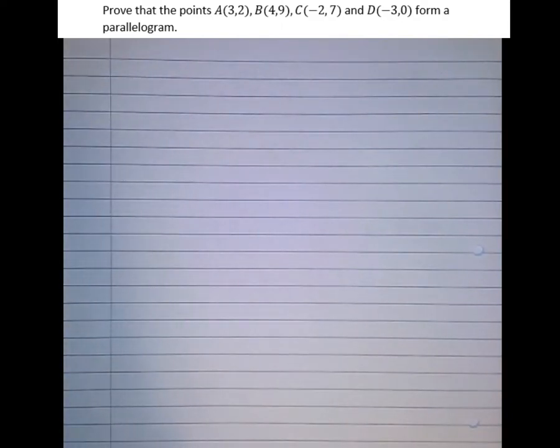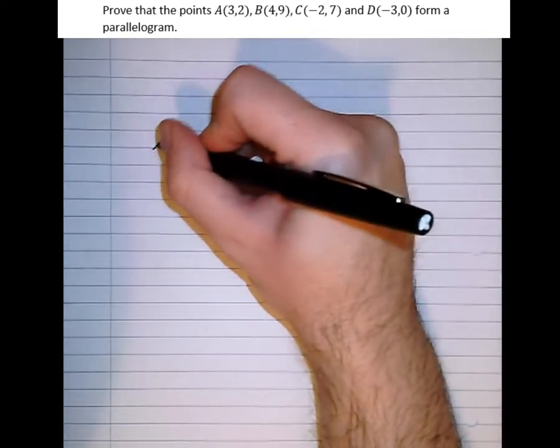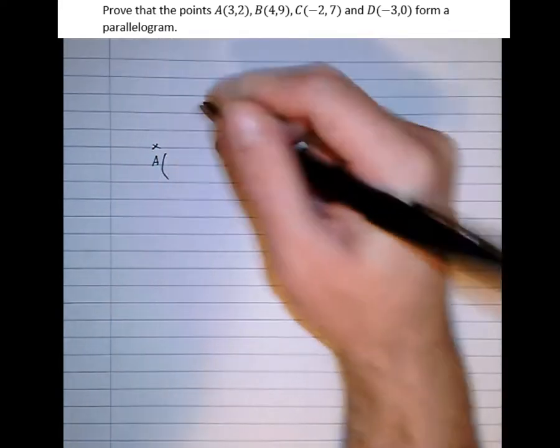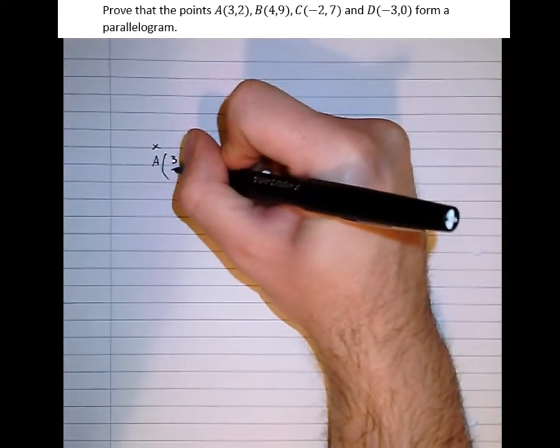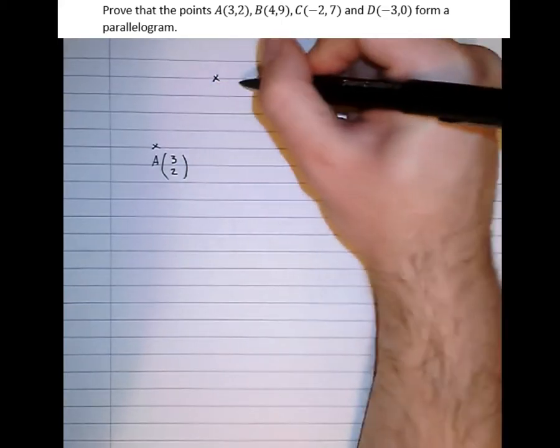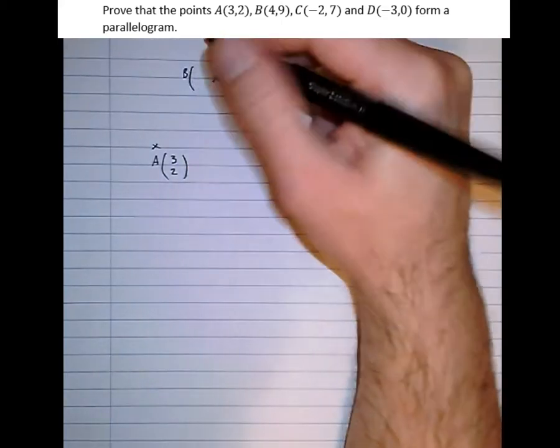So as with any question of this type involving shapes it helps to have a good diagram of the situation. So A is (3,2), B is (4,9),